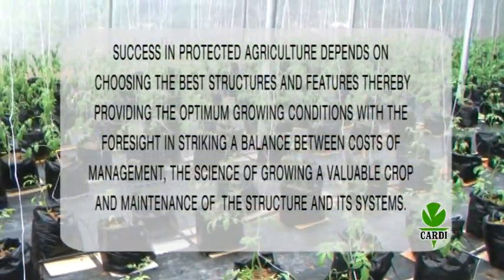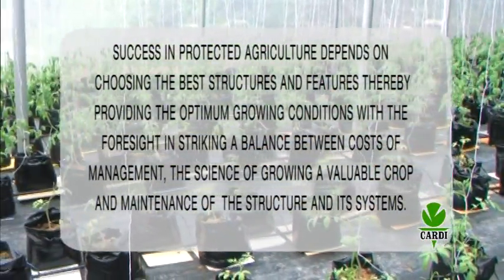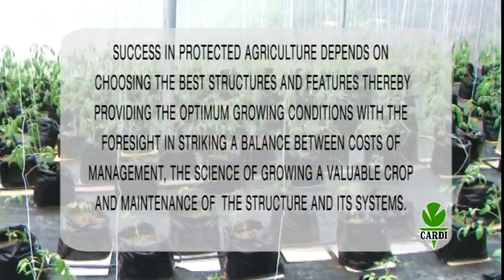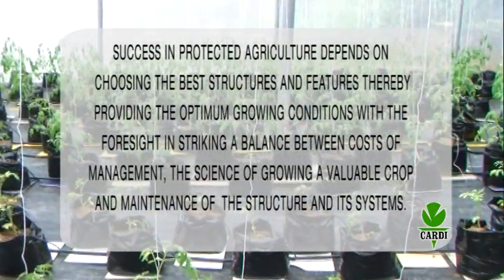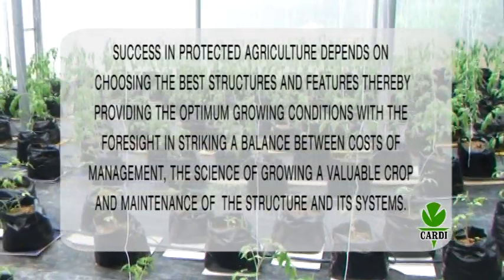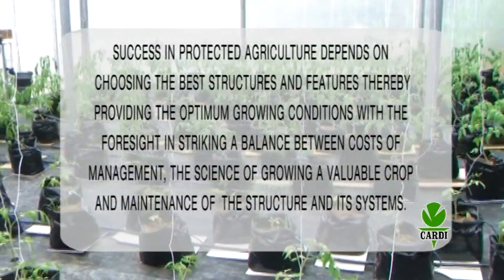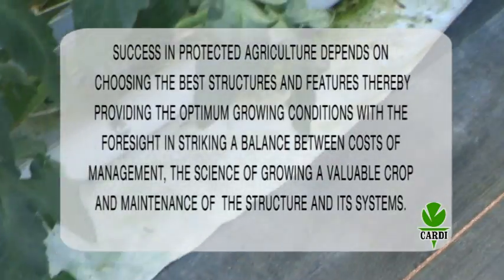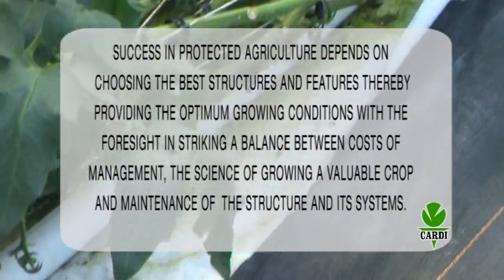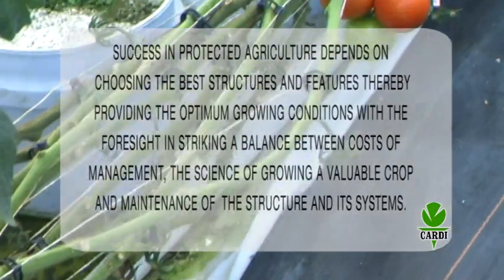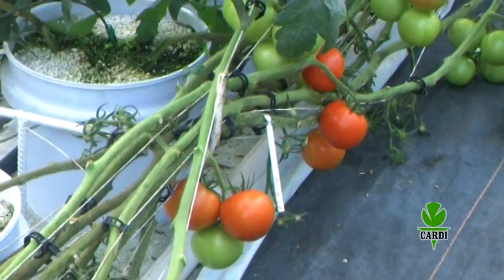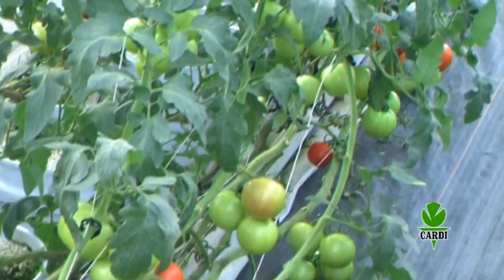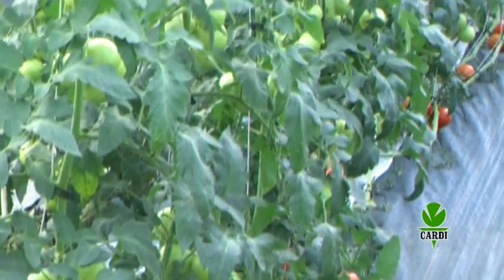Success in protected agriculture depends on choosing the best structures and features, thereby providing the optimum growing conditions with the foresight in striking a balance between the costs of management, the science of growing a valuable crop, and maintenance of the structure and its systems. It is a means to obtaining significant profits from the greatest yield with the best quality of the harvest produced.